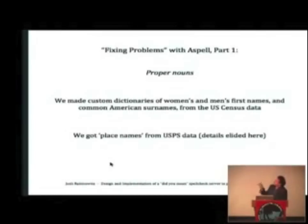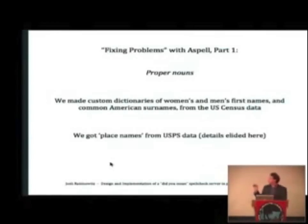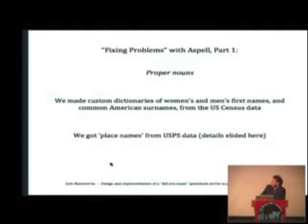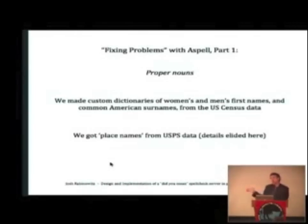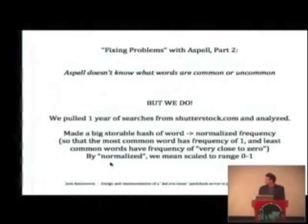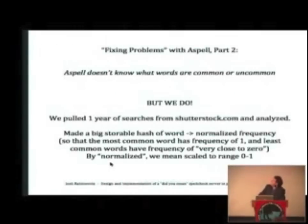The first problem was making a dictionary of proper nouns. I took a minimal approach: I went through US census data, which has lists of the top thousand female and male names and surnames, and made dictionaries from that data. We also got place names from US Postal Service data. It turns out place names differ across languages, so we only dealt with this for English for now, but eventually we'll need to get place names in all the different languages.